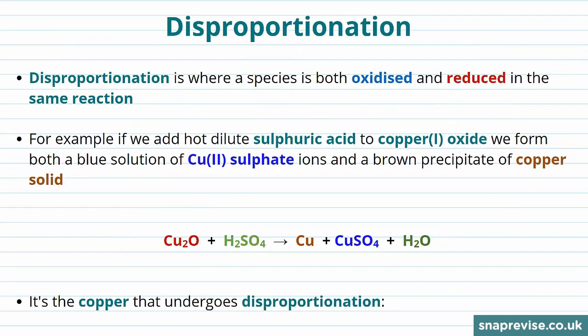Because of their multiple oxidation states, transition metals can undergo disproportionation. Disproportionation is a process where a species is both oxidized and reduced in the same reaction.